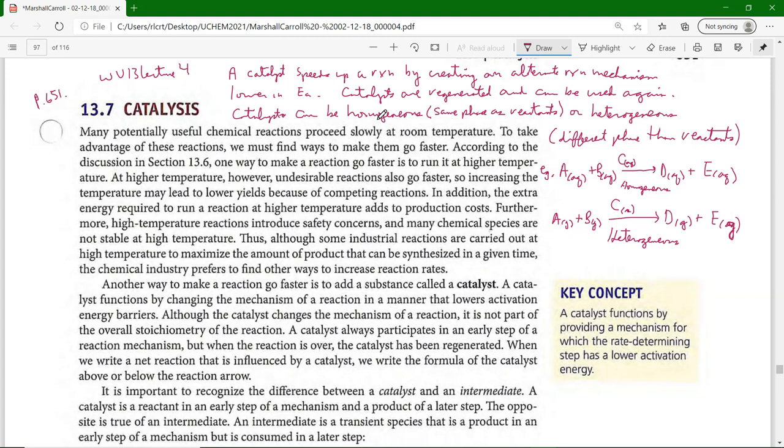Catalysts can be homogeneous, that means they're in the same phase as the reactants, or heterogeneous, where they're in a different phase than the reactants. Here we see A aqueous plus B aqueous, and the catalyst is put over the reaction arrow, C aqueous, goes to D aqueous plus E aqueous. That is a homogeneous catalysis system. The reactants and the catalyst all have to be the same phase to designate that process as homogeneous catalysis.